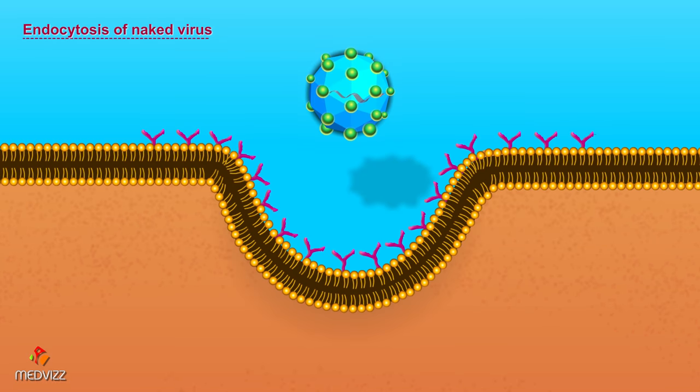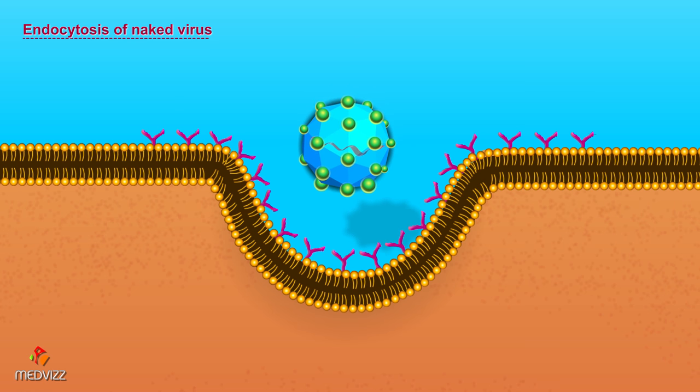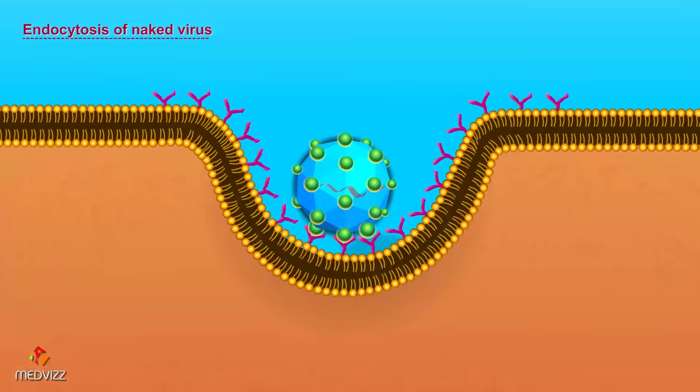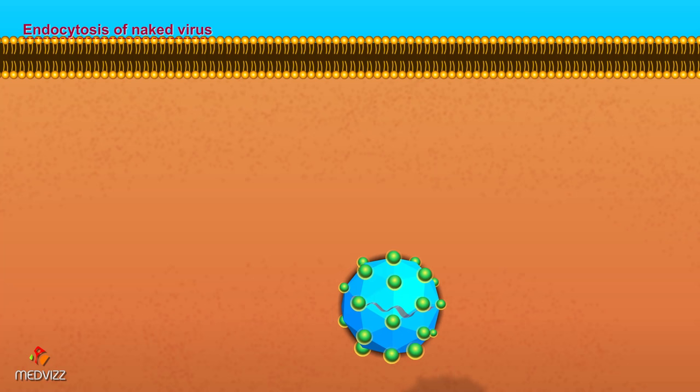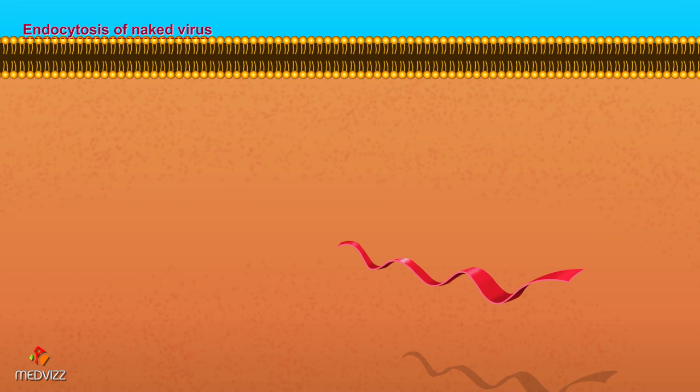A naked virion also enters by endocytosis. Since the virus has no envelope, it cannot fuse with the plasma membrane. After being engulfed, the viral nucleic acid is released from the endocytic vesicle and the nucleic acid separates from the capsid.